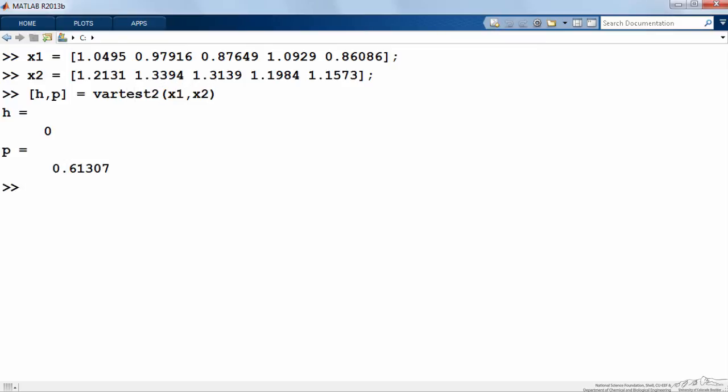And I return a p value of 0.61, h is 0, which means we cannot reject the null hypothesis. It looks like measurements for both samples come from two populations with the same variance.